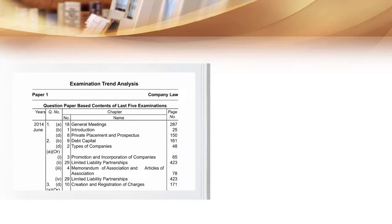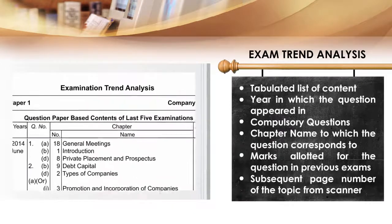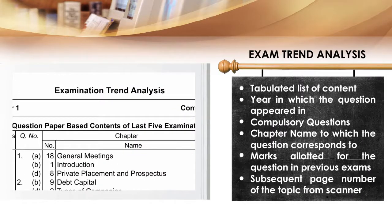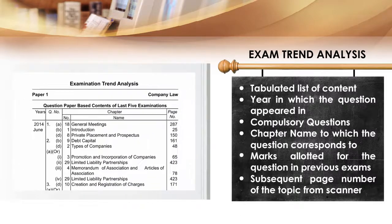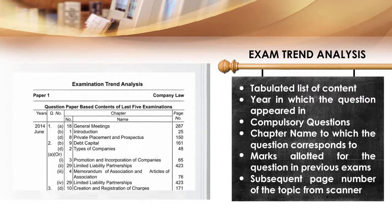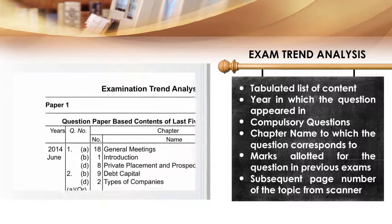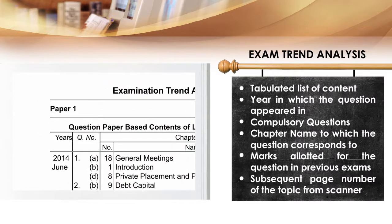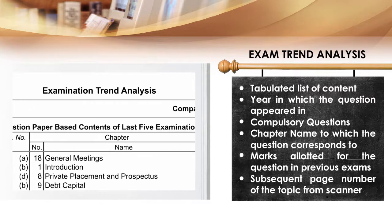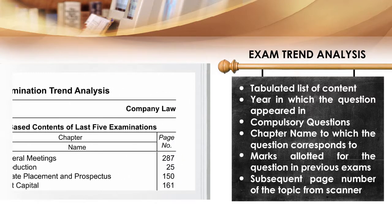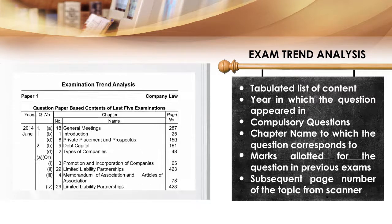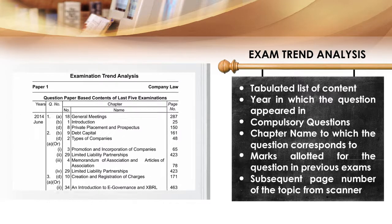Examination trend analysis lists contents based on the last five examinations of a paper, with a clean tabulated content that includes which year a question appeared in, whether the question was compulsory or not, the name of the chapter a question is from, and the subsequent page number in the scanner book — so you can find the relevant material to study without wasting time.